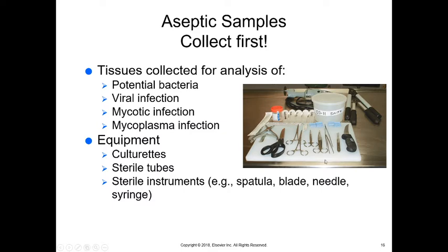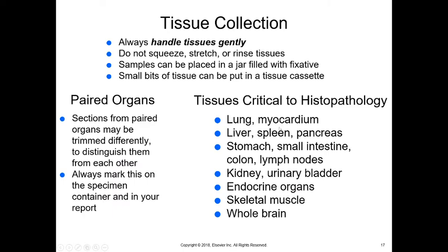Plan what needs to be measured, tied off, or cut before you begin. Handle tissues very gently, as microscopists can see if tissue has been crushed with a thumb forcep and won't know whether the damage occurred before or after death. Do not squeeze, stretch, or rinse tissues. Samples can be placed in jars with fixative or in tissue cassettes. For paired organs such as kidneys, trim them slightly differently so you can always distinguish left from right, and label each container clearly.